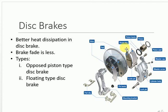The braking load actually acts on the front axle, which is why disc brakes are used on the front for safety purposes. There are different types of disc brakes: the opposed piston type, which has two piston cylinders on both sides of the disc rotor, and the floating disc type, which has only one piston on your disc brake. You would probably have seen the floating type disc brakes on your two-wheelers.